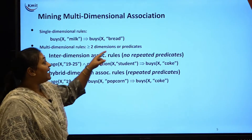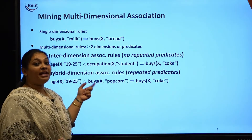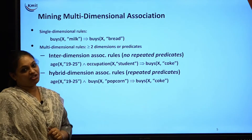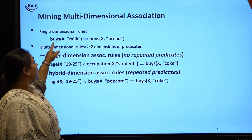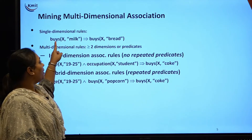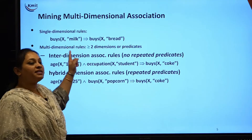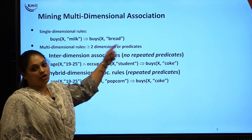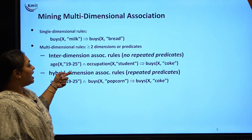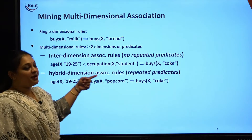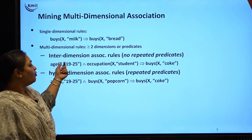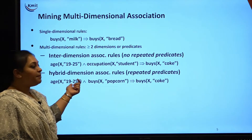Coming to multi-dimensional association, I will be talking about relational databases here. You have single-dimensional analysis and multi-dimensional analysis. What do you mean by single-dimensional? X buys milk, X buys bread — it is single, only one person. I am talking about a single person buying milk, a single person buying bread. When coming to multi-dimensional, you can have two things: no repeated predicates and repeated predicates. A predicate is nothing but the attributes I am using.